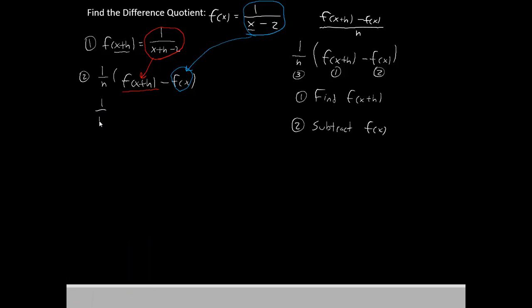So we'll have 1 over h times 1 over x plus h minus 2. And then we subtract 1 over x minus 2.